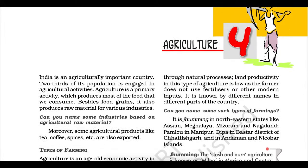It is called Jhuming in northeastern states like Assam, Meghalaya, Mizoram, and Nagaland; Pamlu in Manipur; Dipa in Bastar district of Chhattisgarh; and in Andaman and Nicobar Islands.